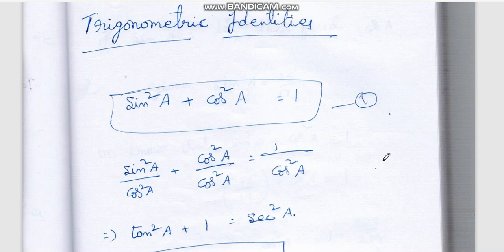These Trigonometric Identities carry 8 marks in the exam, so pay close attention. Therefore, do not skip this video — watch it till the end. If you are new to the Vijayabharthi Champions channel, make sure to subscribe. On this channel, exam-related question papers, model papers, and answers will all be provided for you in advance.